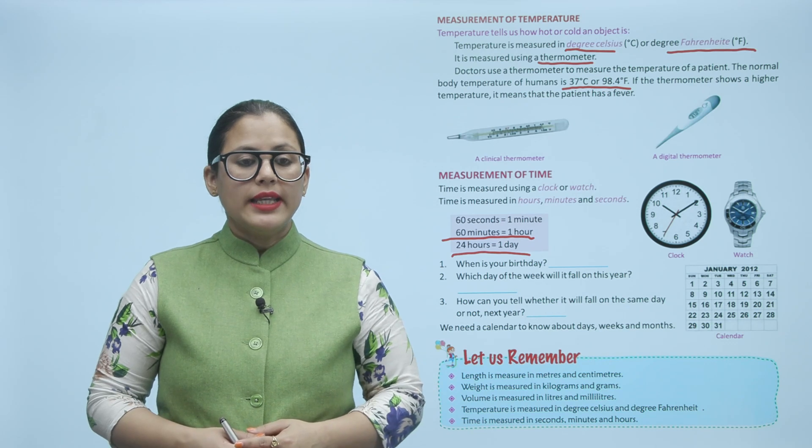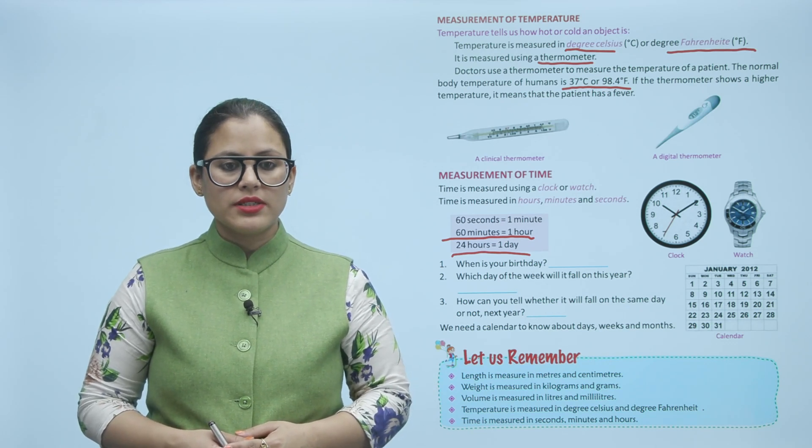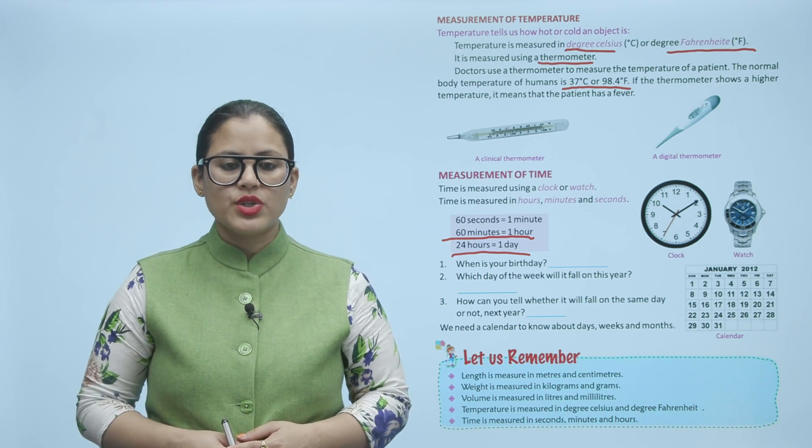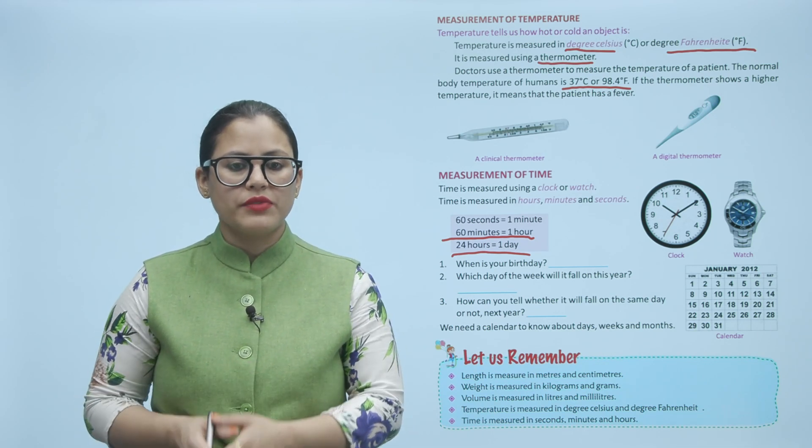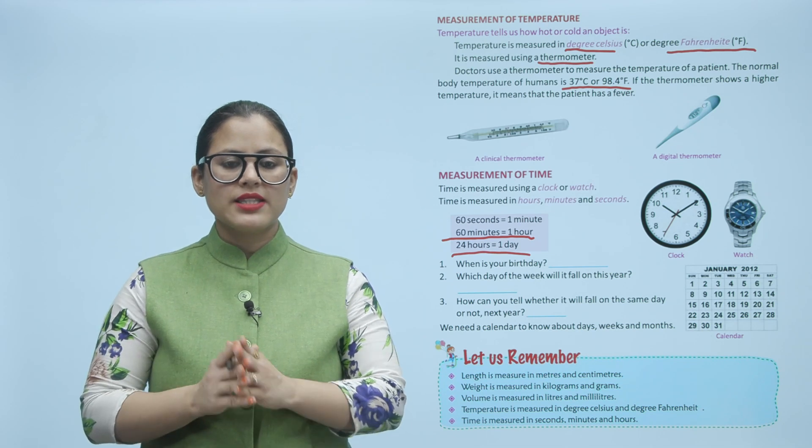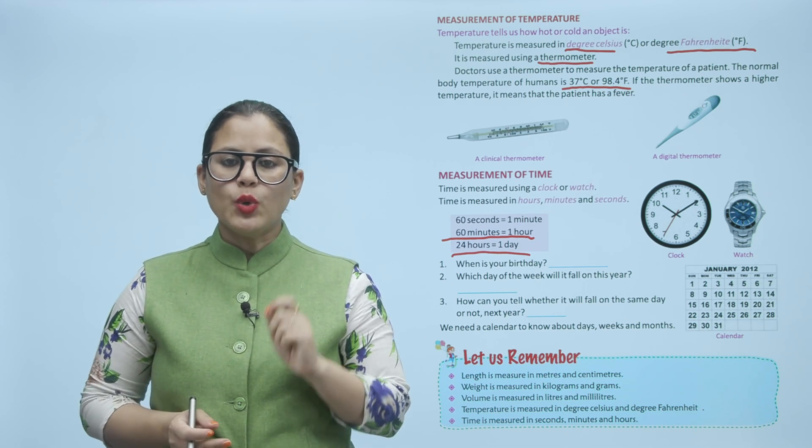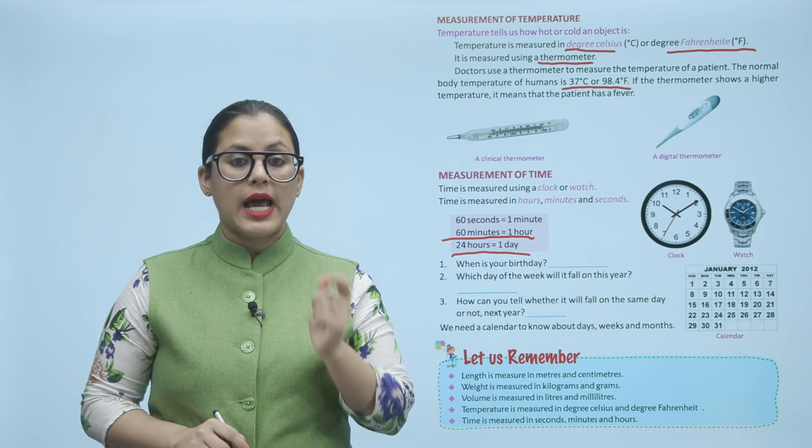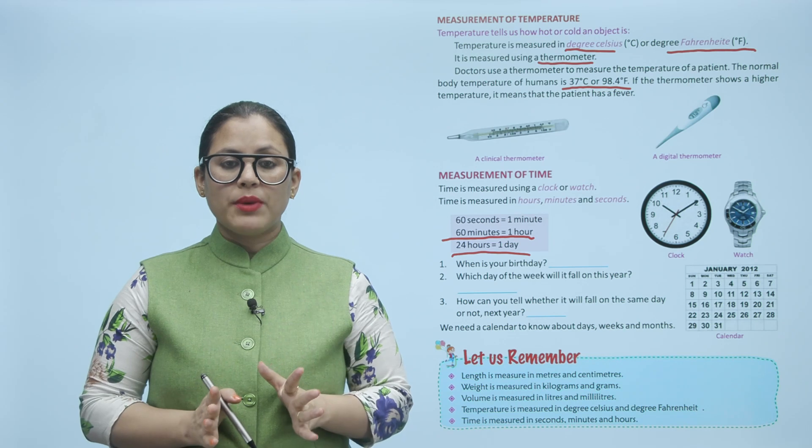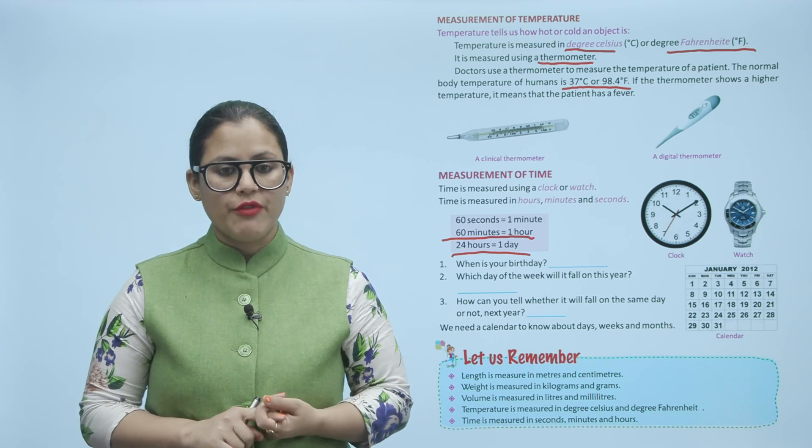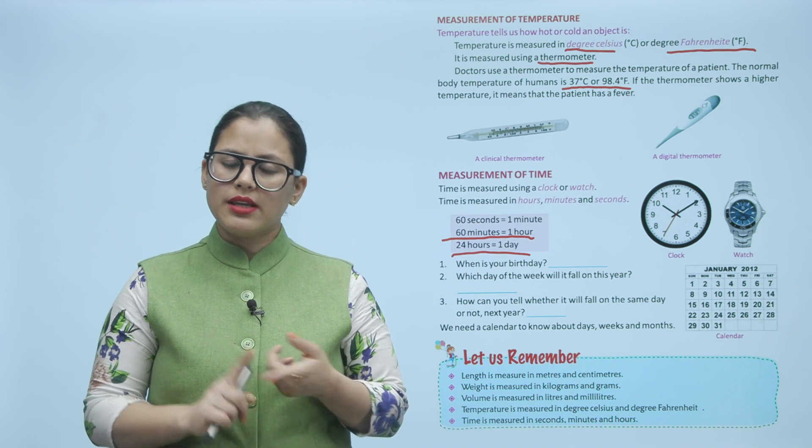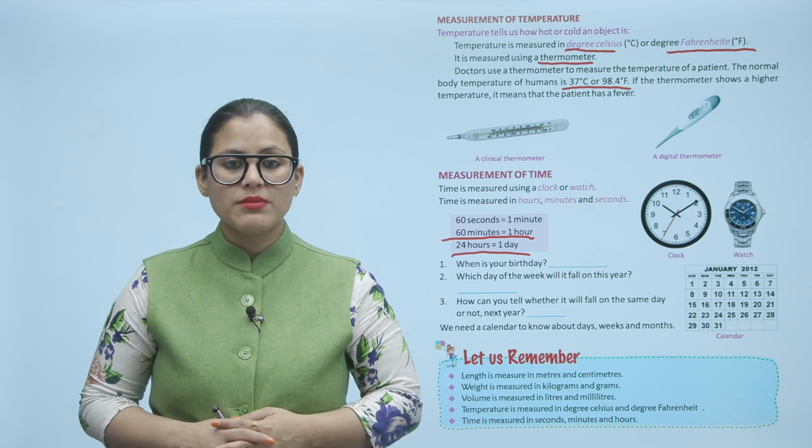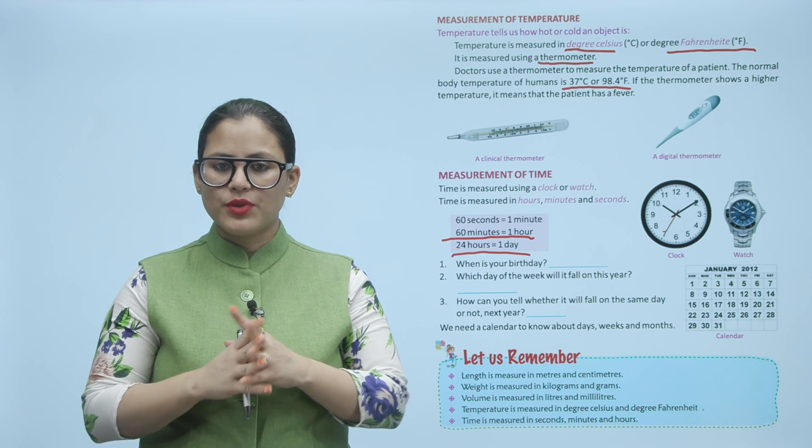Let us remember. Length is measured in meters and centimeters. Weight is measured in kilograms and grams. Volume is measured in liters and milliliters. Temperature is measured in degree Celsius and degree Fahrenheit. Time is measured in seconds, minutes and hours. Length is measured in meter and centimeter. Weight in kilogram or gram. Volume in liter and milliliter. Temperature is measured in degree Celsius or degree Fahrenheit and time is measured in seconds, minutes or hours. Children, I hope you enjoyed this chapter and you will practice this chapter by yourself.